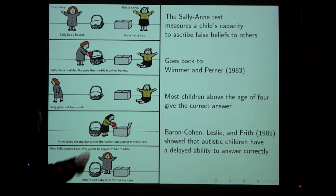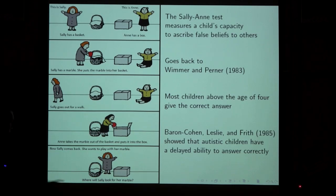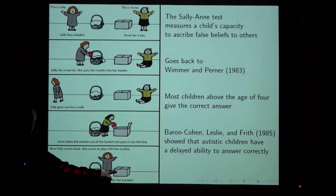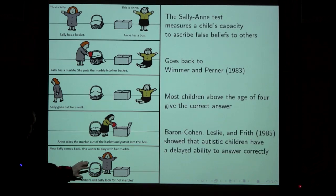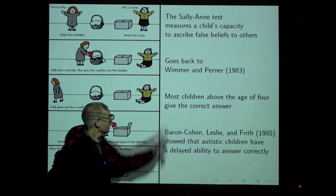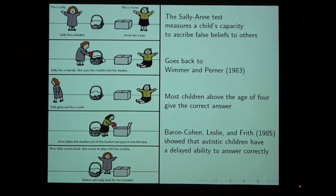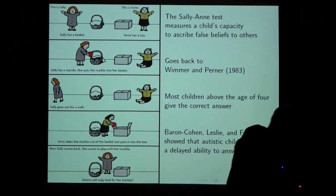It turns out that if a child is below four years of age, the child will reply that Sally will look where the marble really is. But she will, of course, look in her basket, because that's where she left it. Children above the age of four are able to figure out that she will look in the basket. This goes back to a paper from 1983. A couple of years later it was shown that autistic children have a delayed ability to give a correct answer — that's one reason for the psychological interest in the Sally-Ann test.